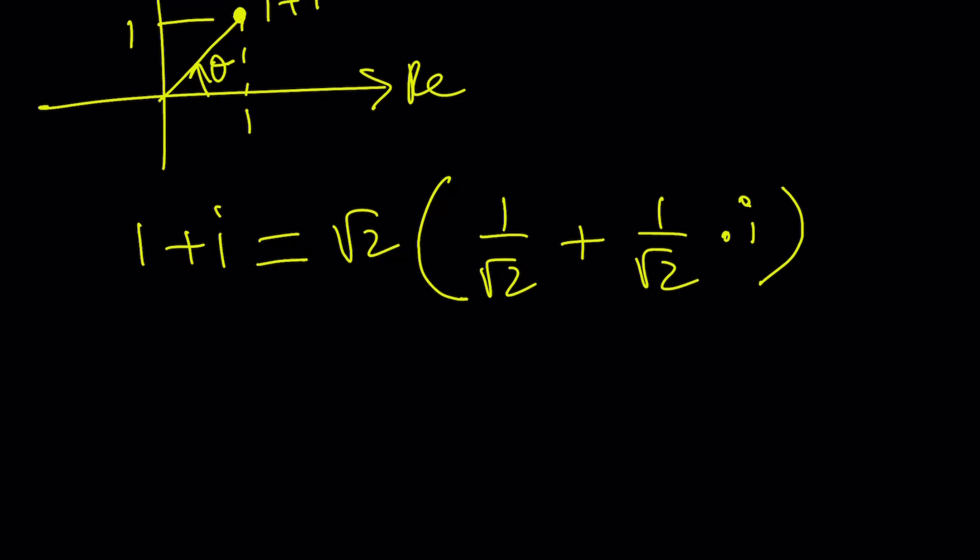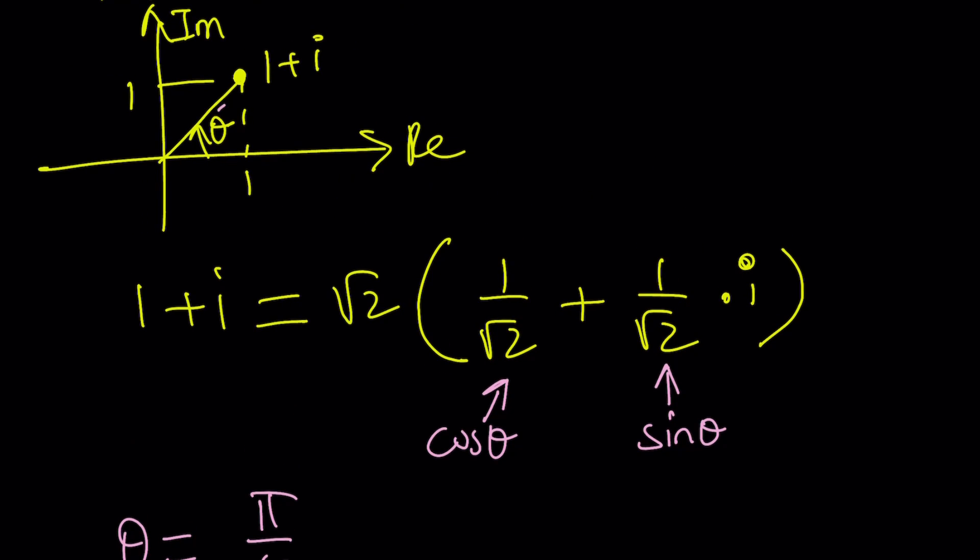Now, we're looking for numbers, or an angle, whose cosine is this, and whose sine is this. Or whose tangent is 1, but it has to be in the first quadrant. So that angle is pi over 4. Awesome. And you can tell from here, it's kind of like an isosceles right triangle, that makes pi over 4 radians.